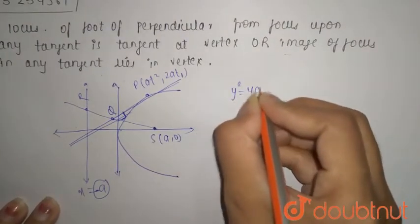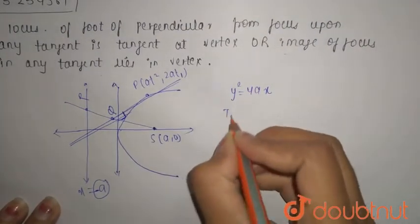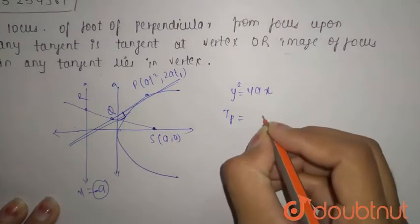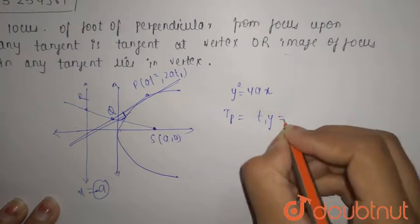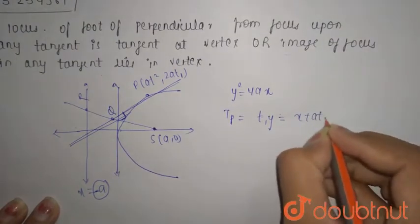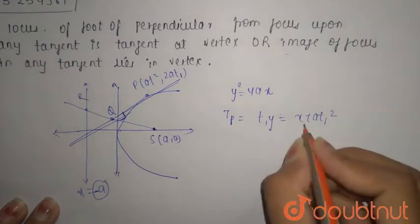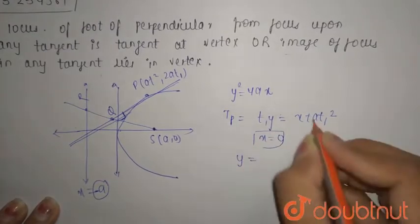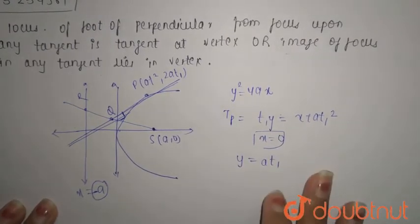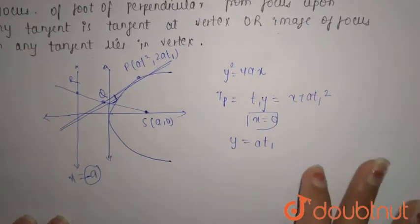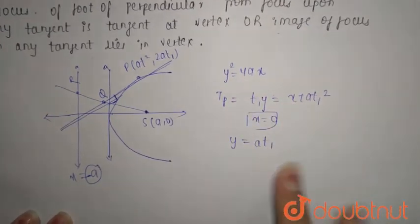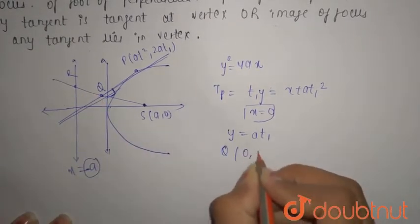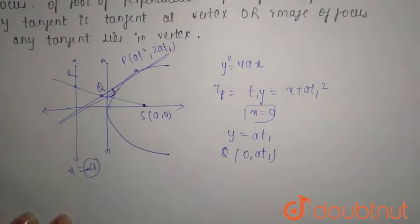The parabola is y² = 4ax, and the point P is (at₁², 2at₁). The equation of the tangent was nothing but t₁y = x + at₁². When x-coordinate is zero, y equals at₁ only, because t₁ cancels. So x = 0 gives y = at₁, and the coordinates of Q will be (0, at₁).